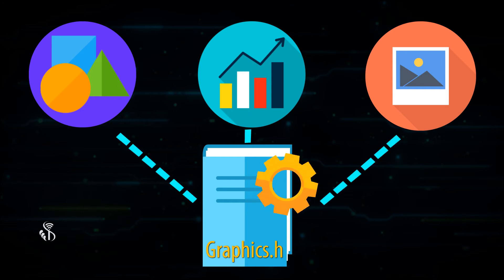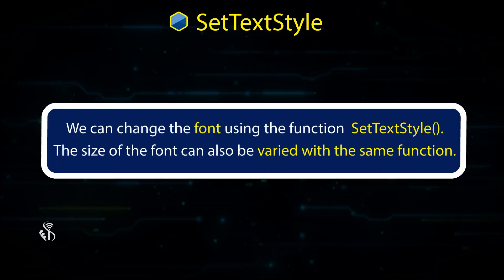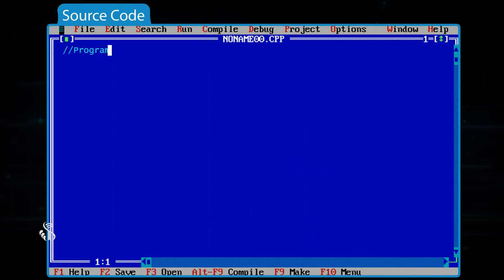Let us now see what features are provided to us by this library. settextstyle: we can change the font using the function settextstyle; the size of the font can also be varied with the same function. Let us now see how this is done. Program to change display font: #include <conio.h>